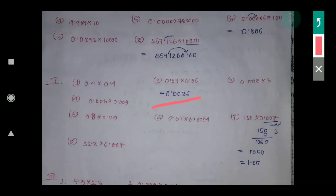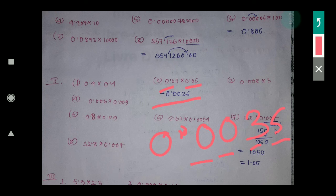This one: 0.07 × 0.5. 5 × 7 is how much? 35. Here 2 decimal places and here 1 decimal place — wait, 2 plus 2 equals 4. That means the answer will be in 4 decimal places: 0.0035. Now check: 1, 2, 3, 4 — 4 decimal places. That means after the decimal point, how many numbers are there? That is called the number of decimal places. Here after the decimal point there are 4 numbers, that means 4 decimal places.